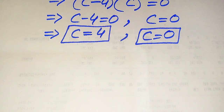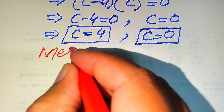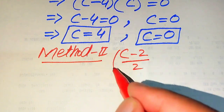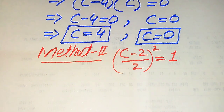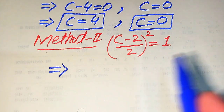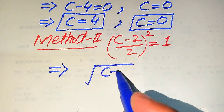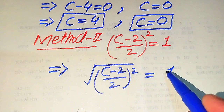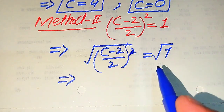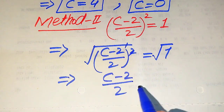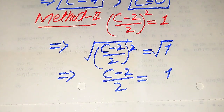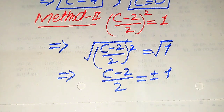Now we solve this problem using the second method. The given question statement is (c minus 2) divided by 2, whole square, equals 1. We take the square root on both sides. Taking the square root, the square and square root cancel, giving (c minus 2) divided by 2 equals the square root of 1. Since square root of 1 equals 1, and when we apply square root to both sides we write a plus or minus sign.